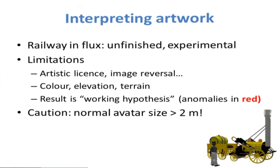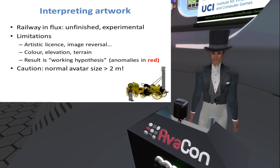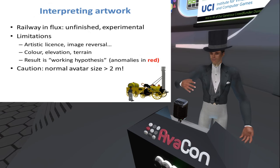When it comes to interpreting the artwork, it's actually quite a complex problem because the railway was very much in flux around this time. When it opened it wasn't finished — it was very much experimental; they didn't quite know how things were working and there was nothing to base their decisions on. Some artists doubtless used artistic licence, some images became reversed during the copying process, and we know relatively little about the true colour of what we're looking at — this is ten years before there was any even black-and-white photography.